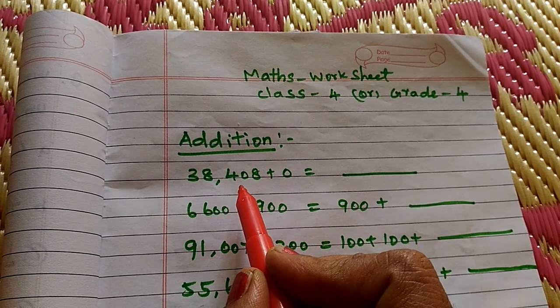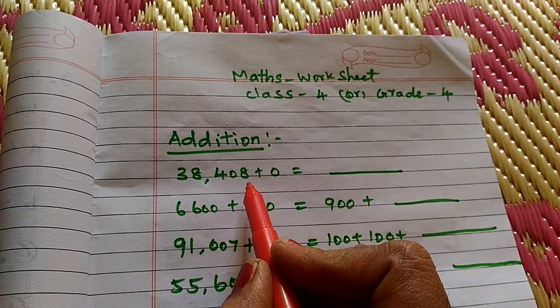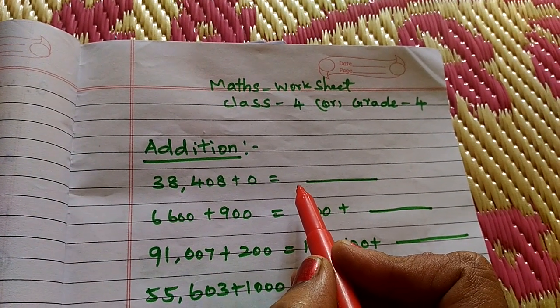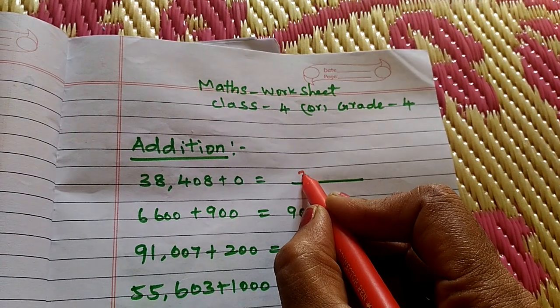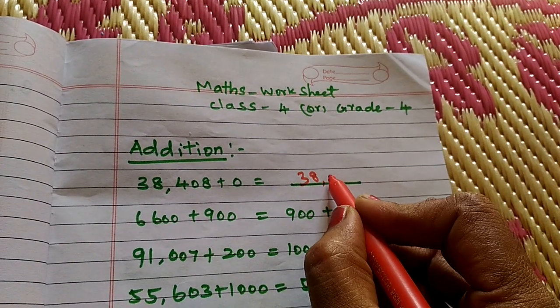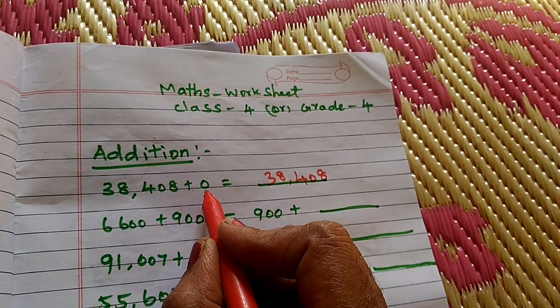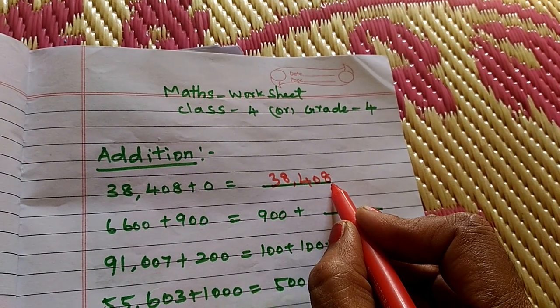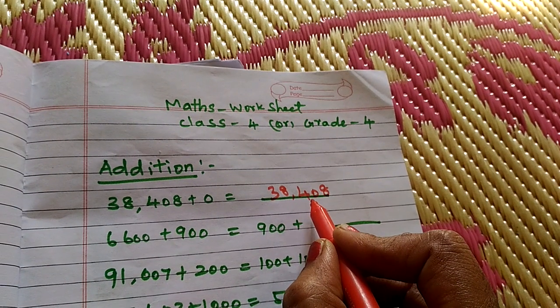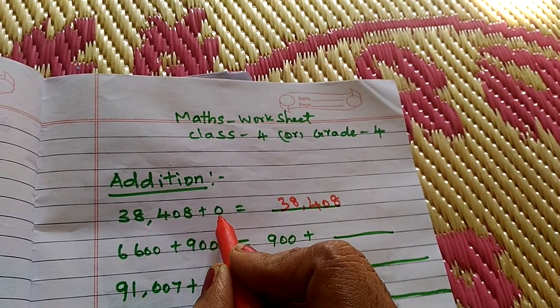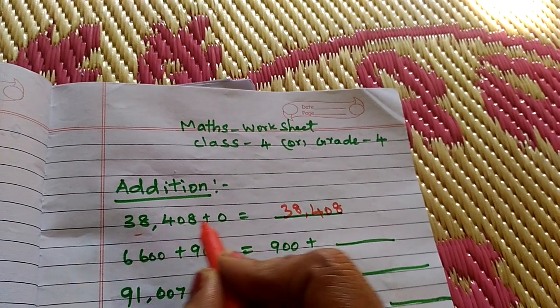38,408 plus 0 equals 38,408. If you add any number to 0, you get same number. So, 38,408. If you add any number to 0, you get same number.